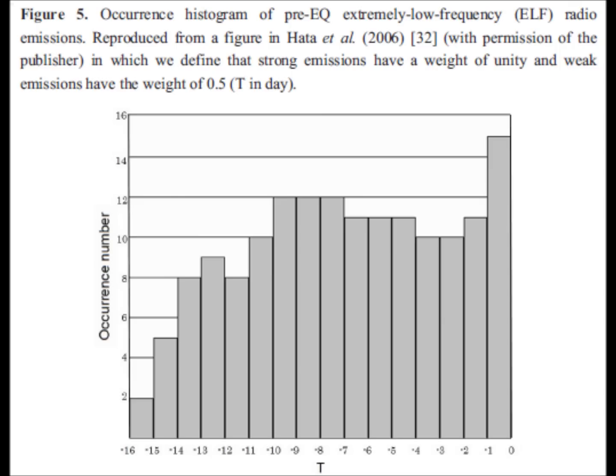In figures 5 and 6 we look at extremely low frequency (ELF). In figure 5 we see the occurrence histogram — the frequency histogram — of ELF emissions. We see a similar distribution of onset time: about two weeks before we start seeing an increase, about 10 days to a week before we see a peak, then a slight decrease followed by an increase again the day before, and an abrupt increase just before the earthquake.